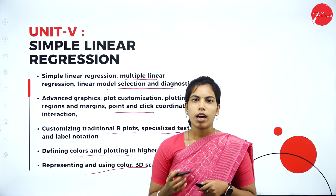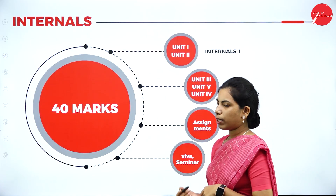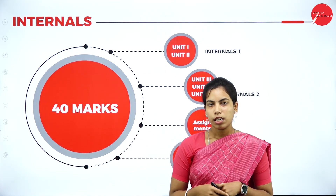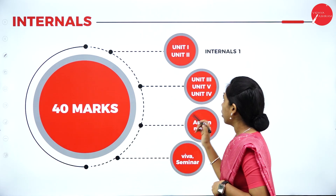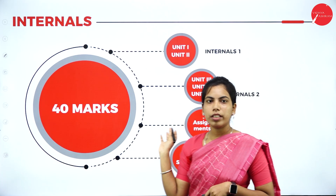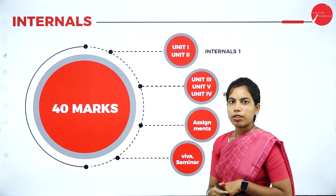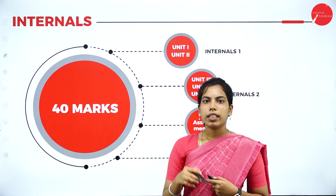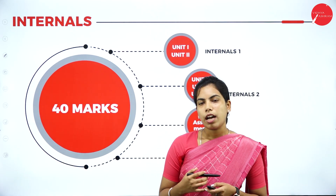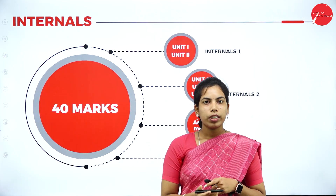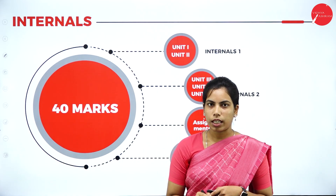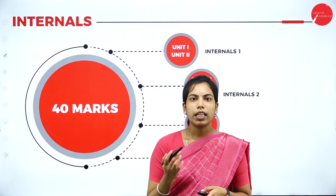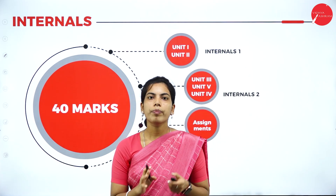The internal pattern is a 60/40 split: 60 marks for the main paper and 40 marks for internal assessment. The 40 marks are distributed as follows: Units 1 and 2 for Internal 1, and Units 3, 4, and 5 for Internal 2. Each internal exam is out of 30 marks. Either the average of both internals or the best of the two is taken for 30 marks. The remaining 10 marks are assigned through assignments, viva, seminar, or presentation. Total internal marks: 40.